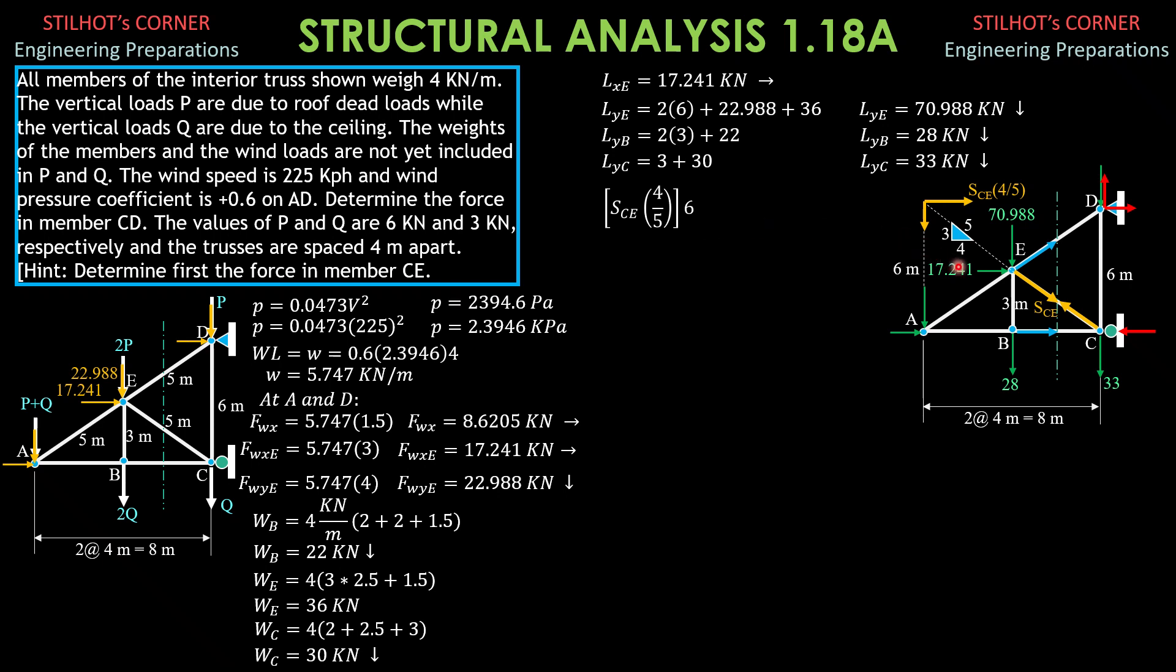Then SCE times 4 over 5 times 6, then this is also clockwise, this 17.241 times 3, then plus combined 70.988 and 28 times 4 meters, remember that's 4 meters, so 70.988 plus 28 LYB times 4 equals 0, so we can now solve for SCE and it is negative.